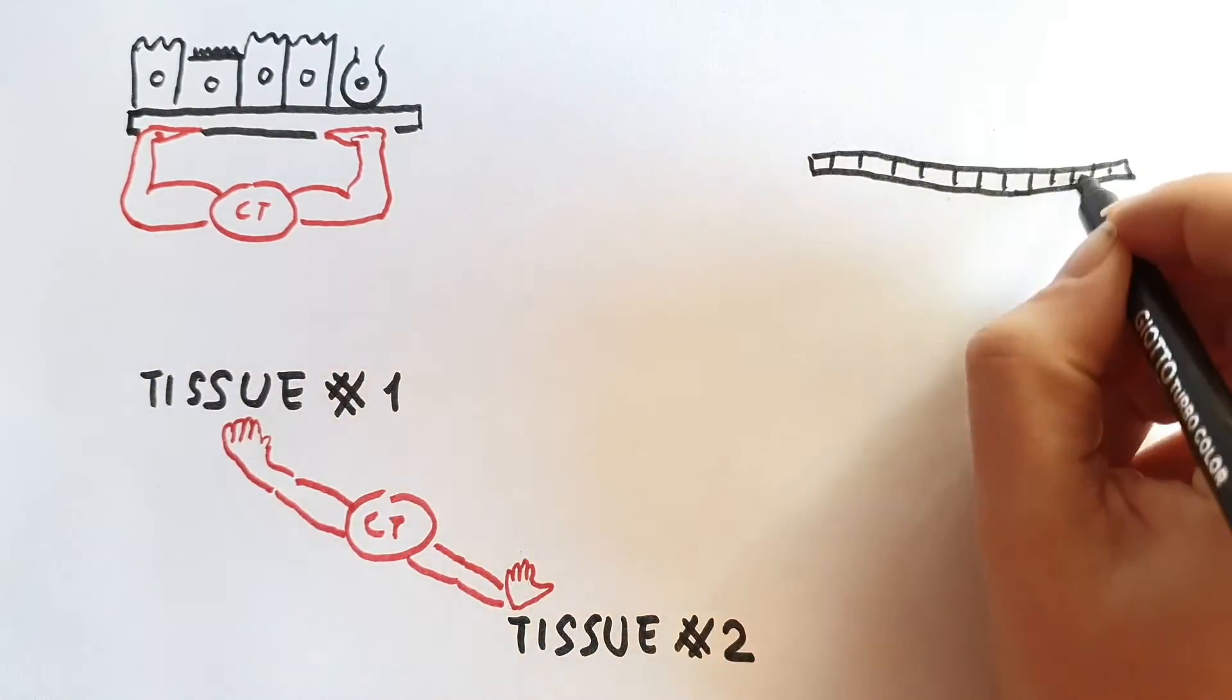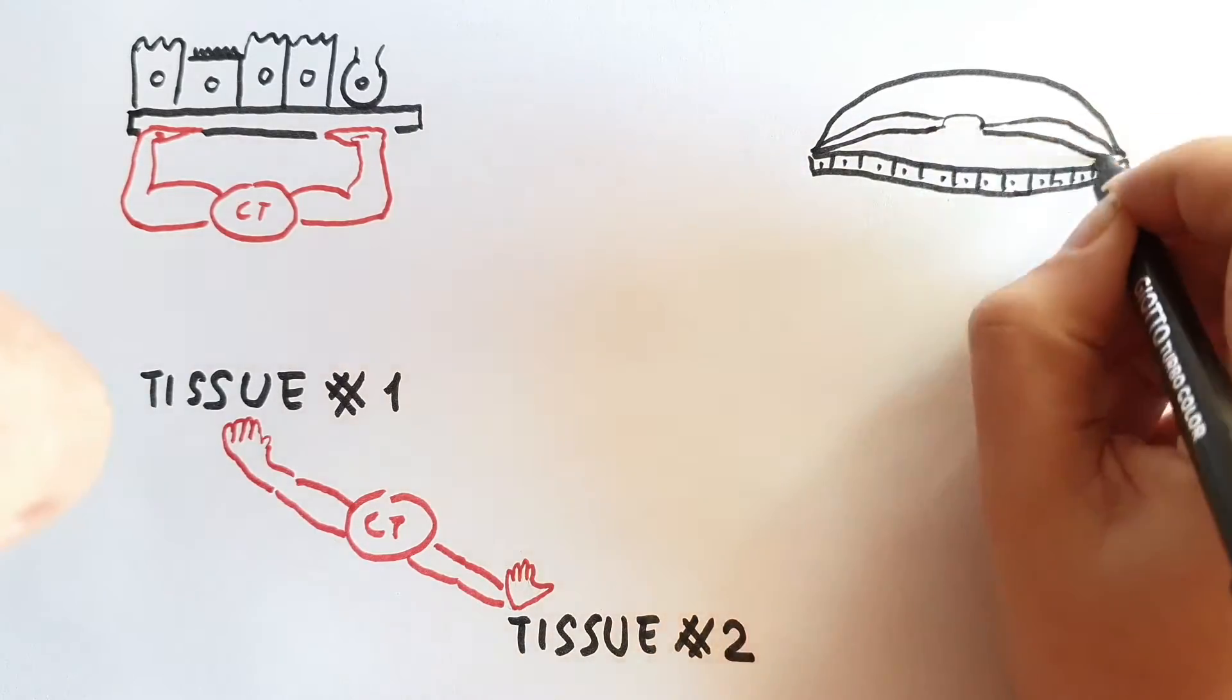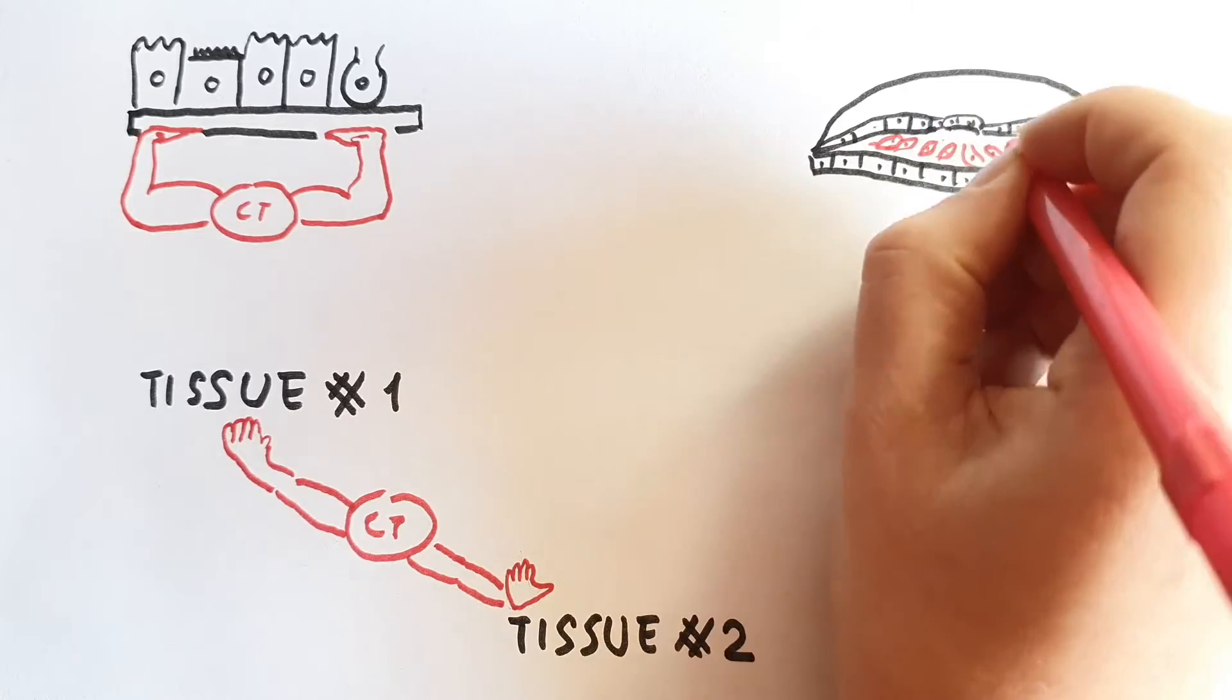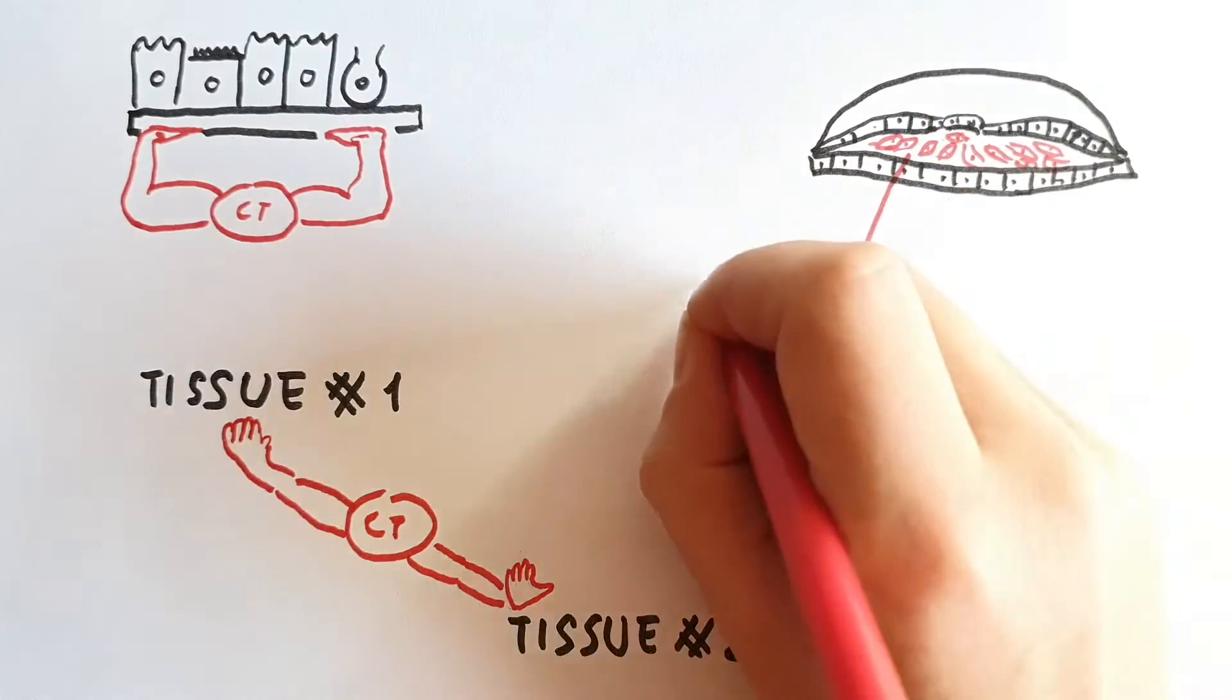Regarding its embryological origin, connective tissue derives from the mesenchyme, a tissue developing mainly from the middle layer of the embryo, the mesoderm.